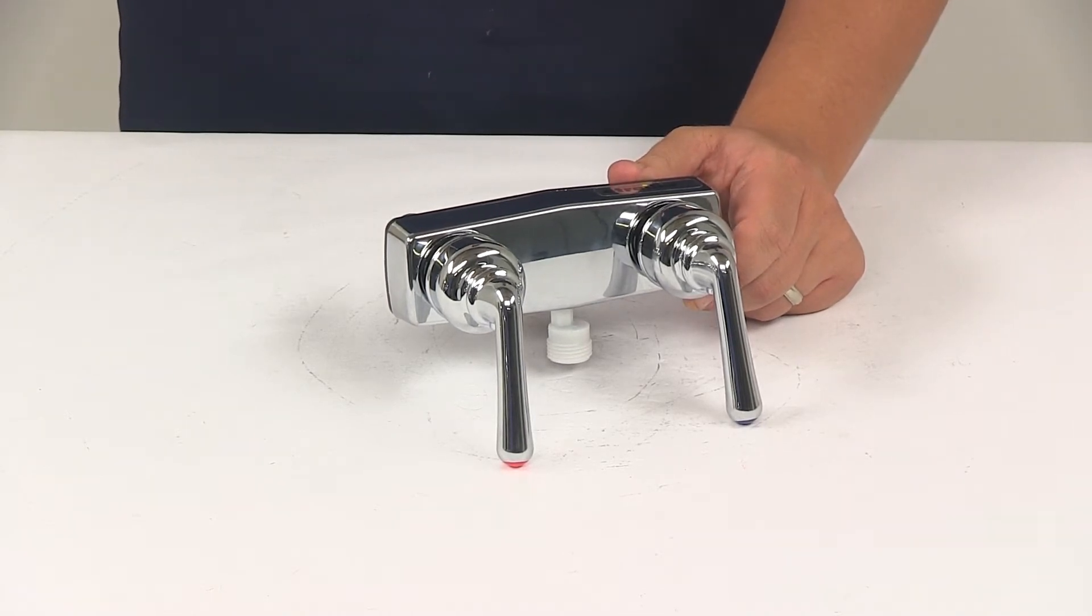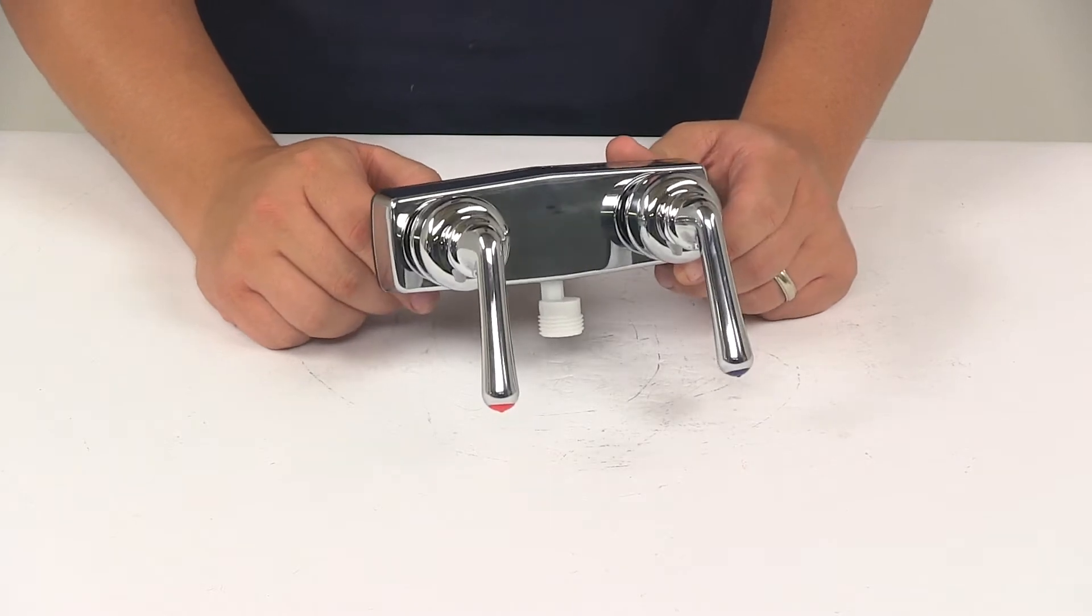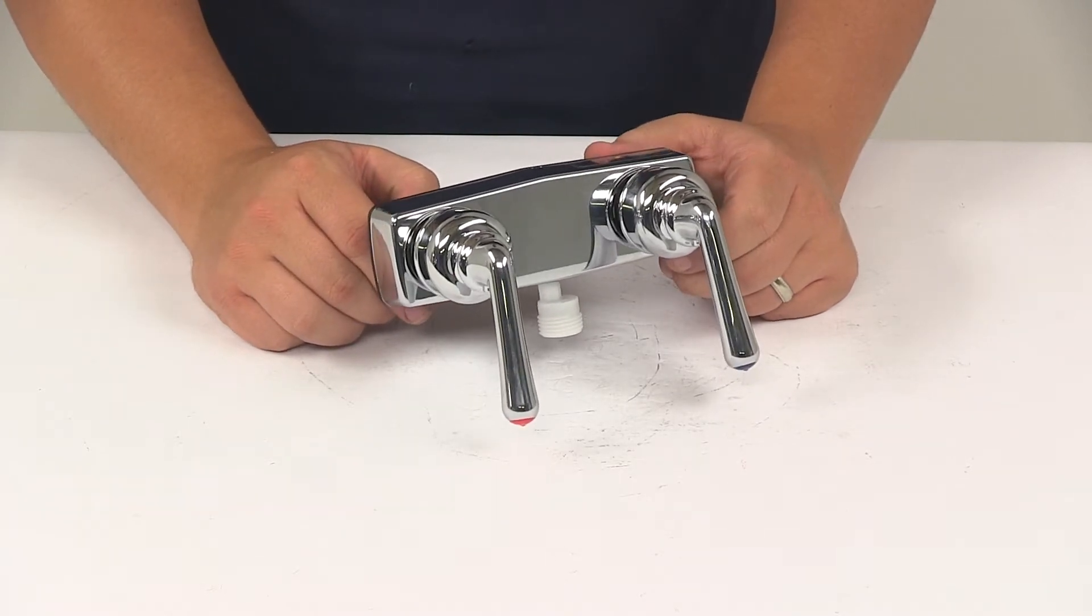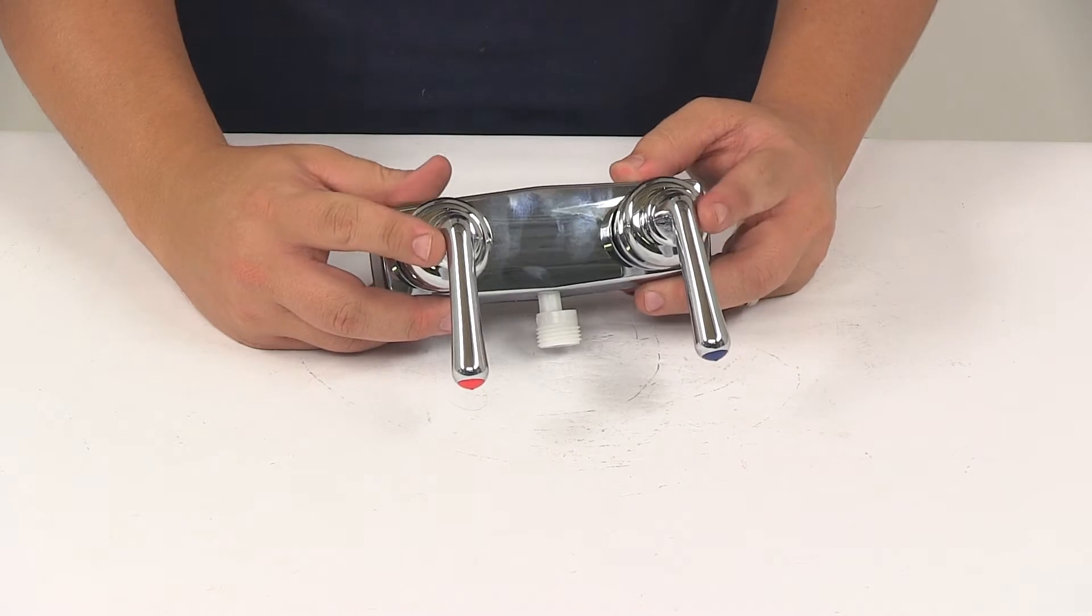Today we're going to be taking a look at the Phoenix Faucets 4-inch dual handle RV shower valve. This unit adds or replaces the shower valve in your RV. It features the dual teacup lever handles.